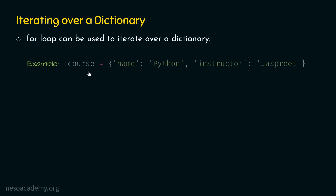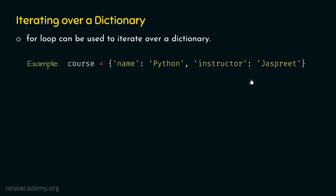Let's create this dictionary called course. This course dictionary consists of two key-value pairs. The first key-value pair is name: python. And the second key-value pair is instructor: jaspreet. This means that the name of the course is python and the instructor of this course is jaspreet.